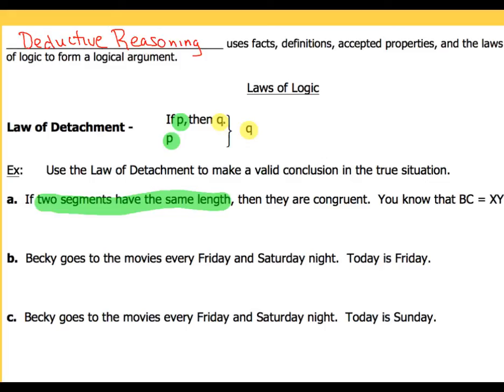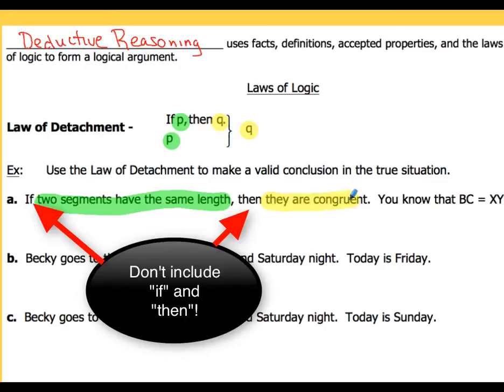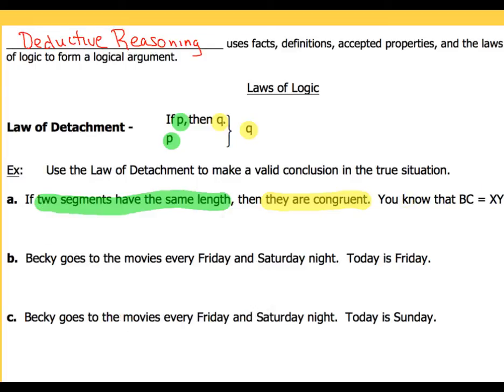The conclusion — the Q part — is going to be 'then they are congruent.' So that's our initial statement: IF P, THEN Q. It's already in that format, so that's really nice. The second statement says you know that BC equals XY. BC equals XY is telling us that those two segments do have the same length.